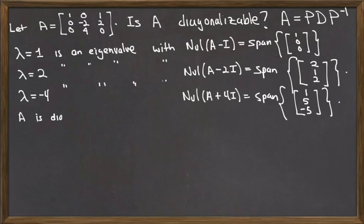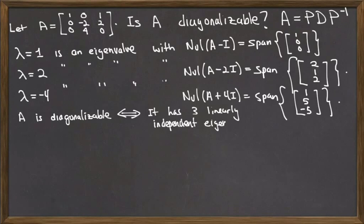A matrix is diagonalizable if and only if it has enough linearly independent eigenvectors. In this case, I have a 3 by 3 matrix. I will need 3 linearly independent eigenvectors. We're lucky here. I do have 1, 2, 3 eigenvectors. They are linearly independent because they correspond to different eigenvalues, and therefore cannot be scalar multiples of each other.